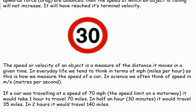The speed or velocity of an object is a measure of the distance it moves in a given time. In everyday life, we tend to think in terms of miles per hour, as this is how we measure the speed of a car. In science, we often think of speed in metres per second. If a car was travelling at a speed of 70 miles an hour — the speed limit on a motorway — it would take one hour to travel 70 miles.